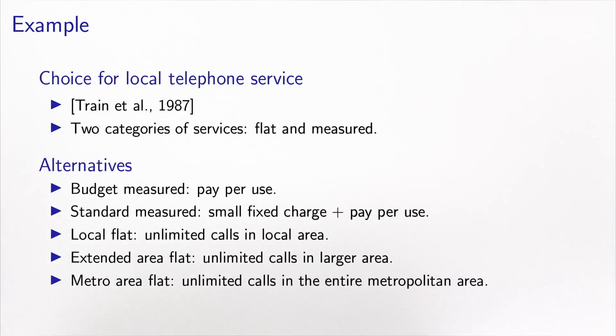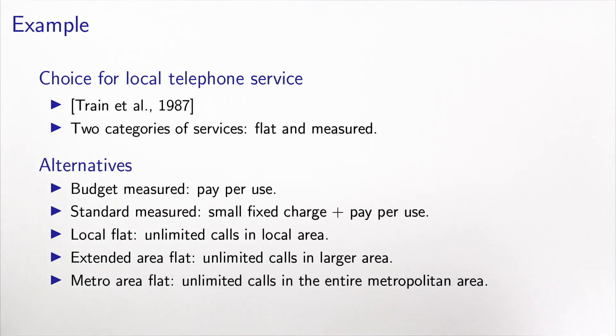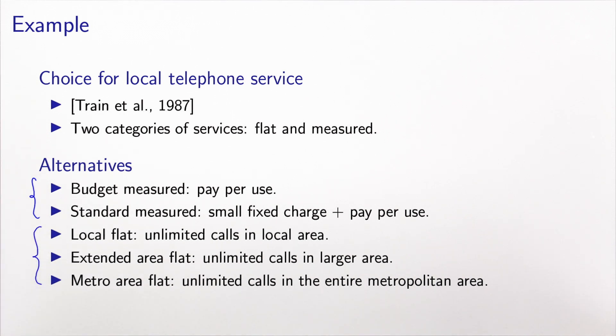To illustrate the concept, I will use an example from an old dataset from the 1980s, which was about the choice for local telephone service. There were two categories of services offered: a flat service where you pay a fixed amount per month and can use the service as much as you like, and a measured service where you pay per use. In this model, we have five alternatives — two measured alternatives and three flat alternatives, each with specific features.